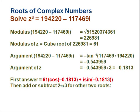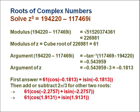Then we simply add or subtract 2π/3 for the other two roots — if it had been a fourth root, we would add or subtract 2π/4. Subtracting 2π/3 gives 61(cos(−2.2757) + i·sin(−2.2757)), and adding 2π/3 gives 61(cos(1.9131) + i·sin(1.9131)).